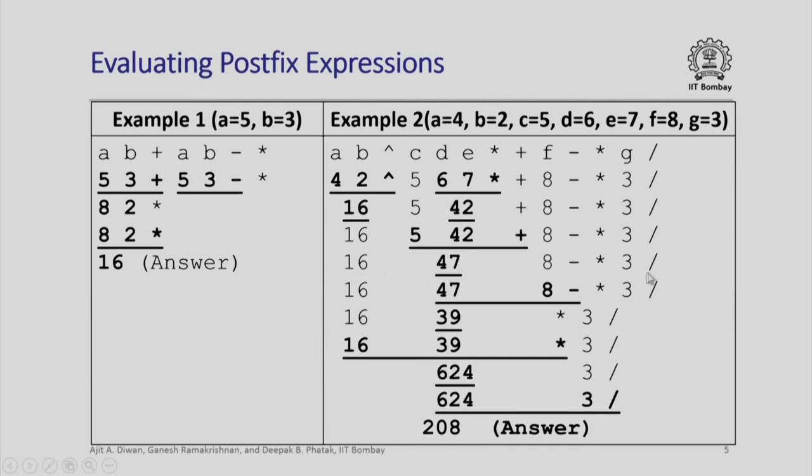Now, I have this resulting expression. In this I notice 47, 8 minus form the correct combination of operators and operand, this will result in a value 39 and I will have 16, 39 star to be the next operator. I will get 624, the final expression reduces to 624, 3 slash and this will be evaluated to get the answer 208. Notice that in this entire assessment, we did not require any parentheses to define the priority of activity.